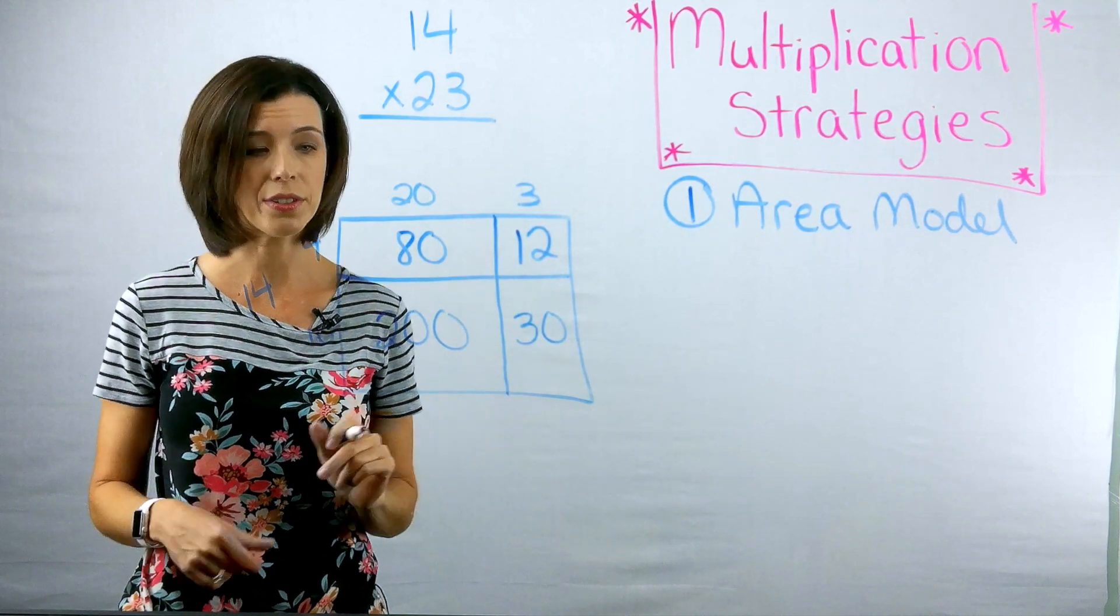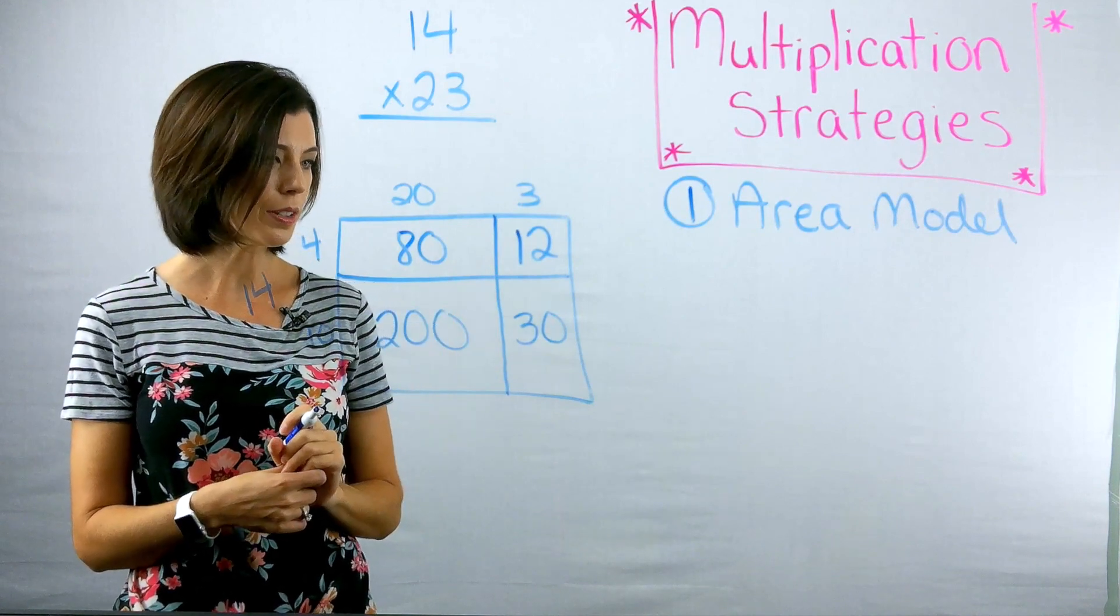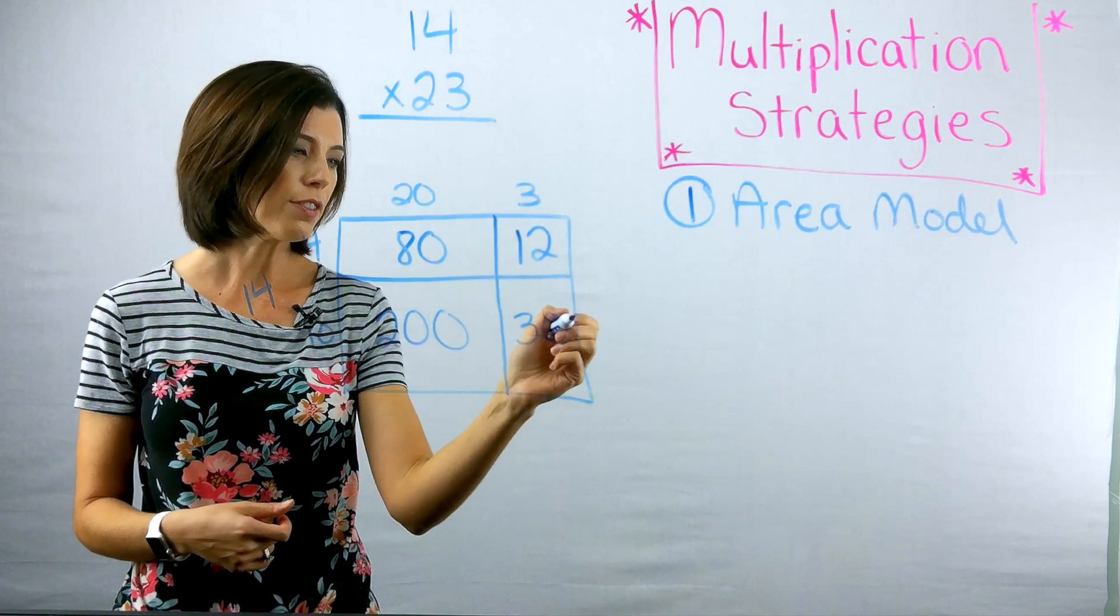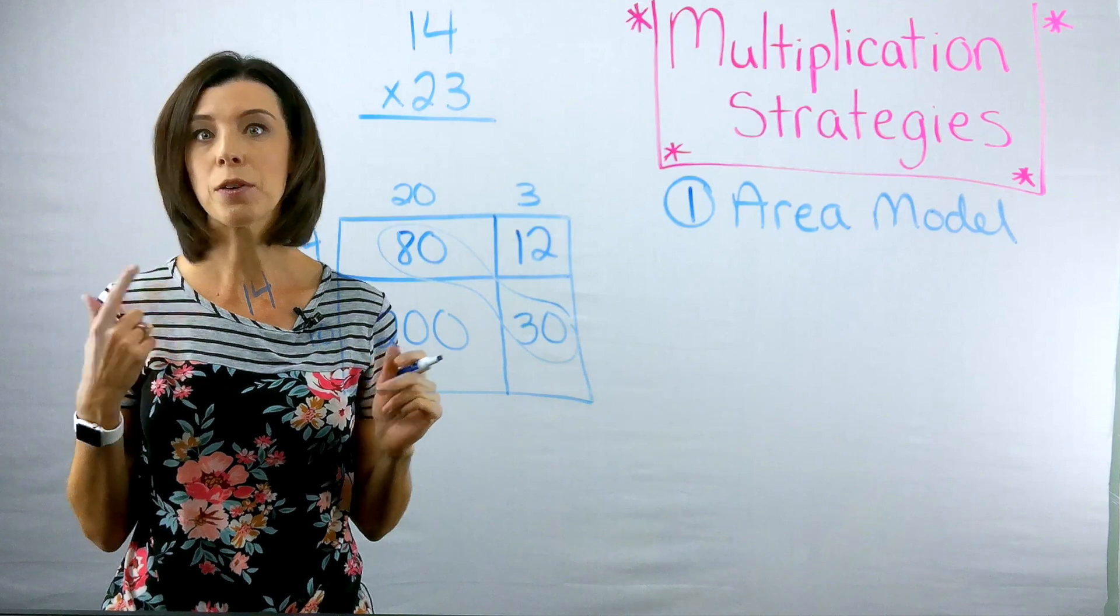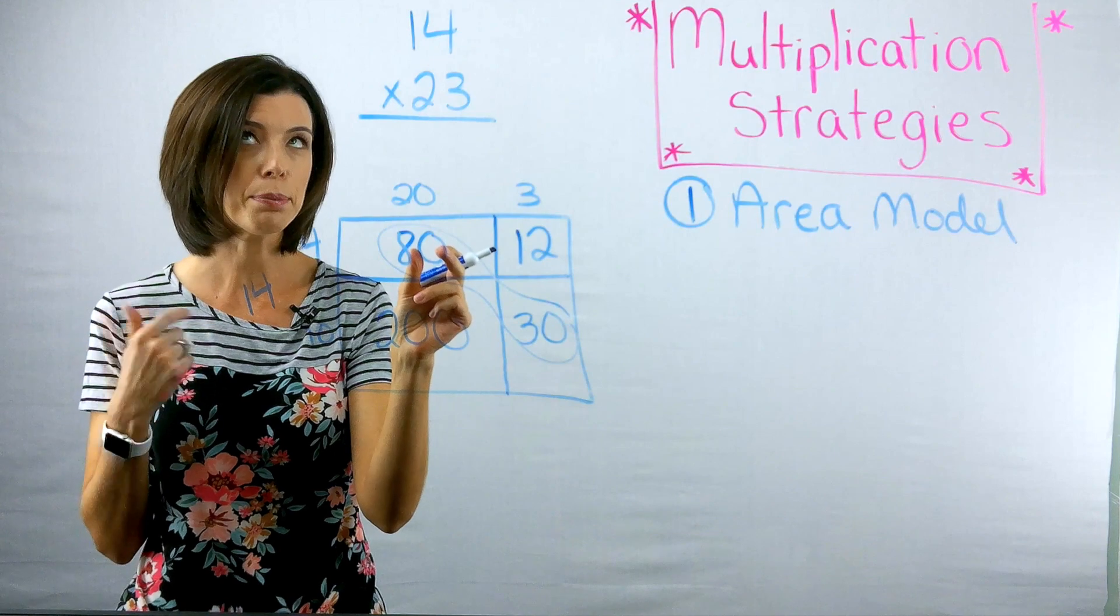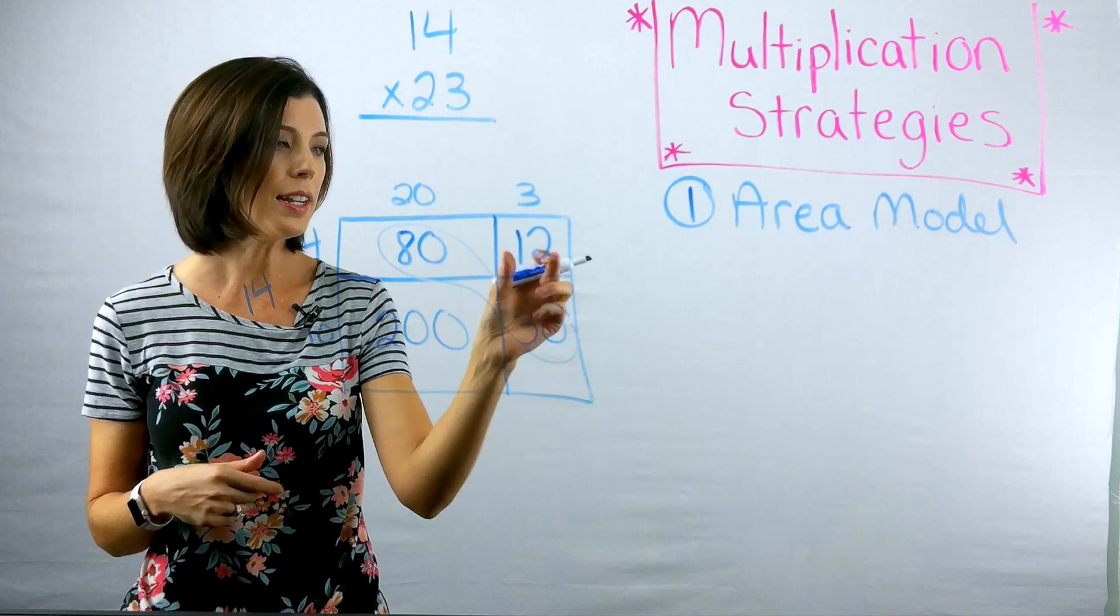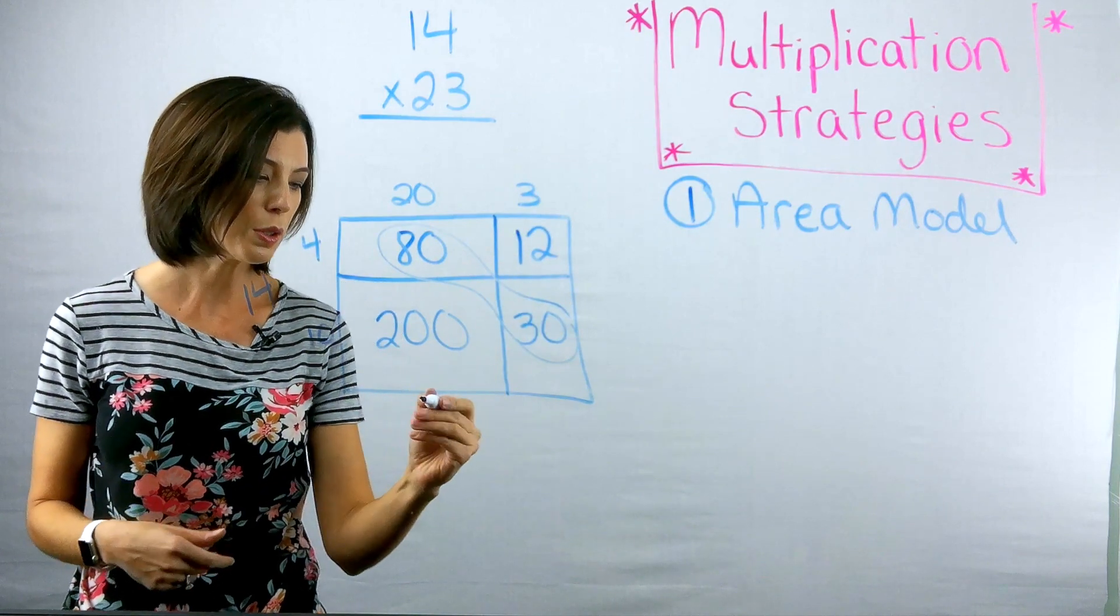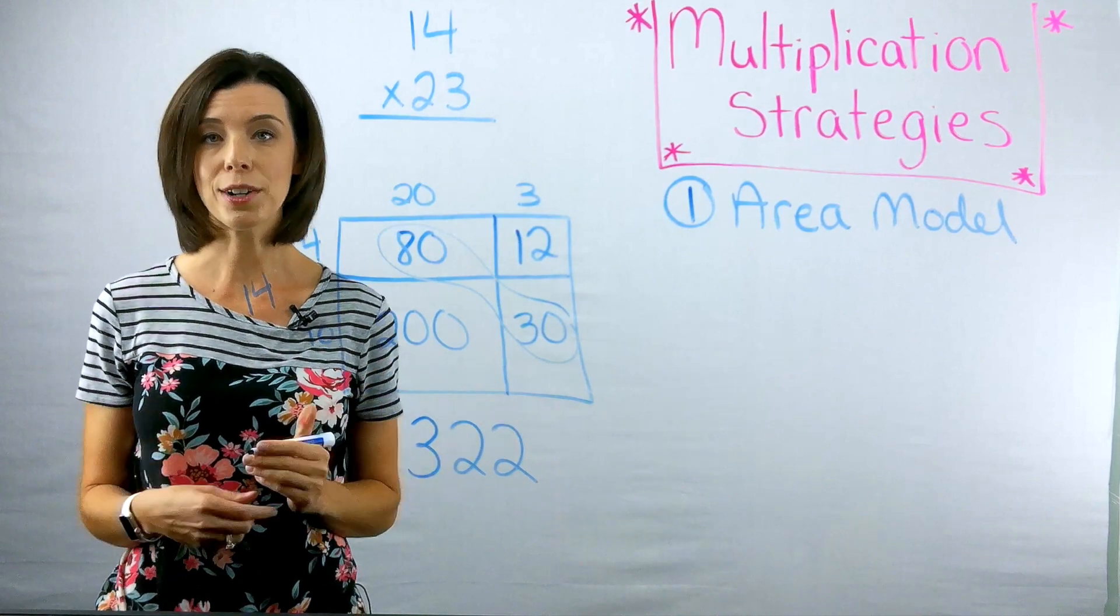Next thing I'm going to do is I'm just going to add these all up together. Now again, I know that I can do some combinations here. I've got 80 and 30, if I go ahead and start there first. So I know that I could make 100 in this case, and take 20 from this 30 to the 80. So 80 plus 20 is 100 plus that extra 10. So I have 110 plus 12 would be 122 plus 200 would be 322. That's one strategy for multiplication.